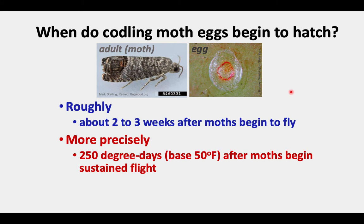Roughly, it's known that this is about two to three weeks after the codling moths begin to fly. But more precisely, it is 250 degree days, base 50, after moths begin sustained flight.